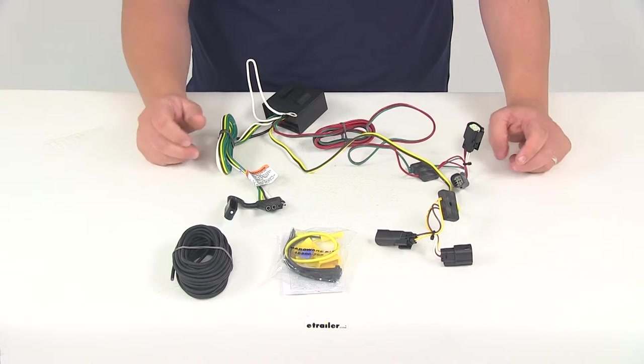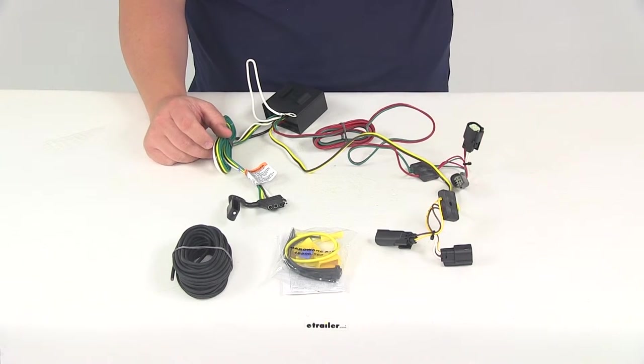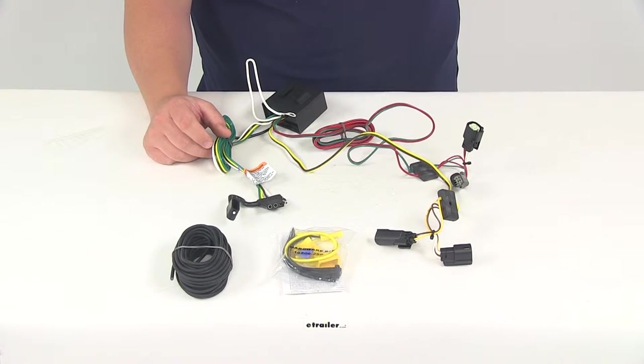When it comes to the maximum amperage for the stop and turn lights we're looking at 4.2 amps per circuit and tail lights we're looking at 7.5 amps.